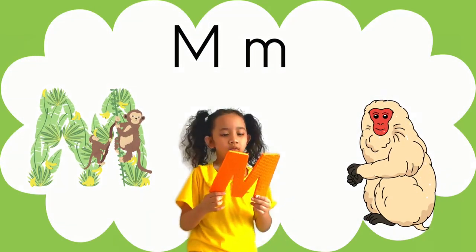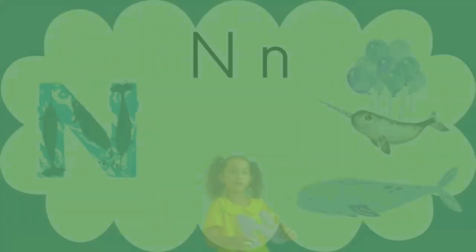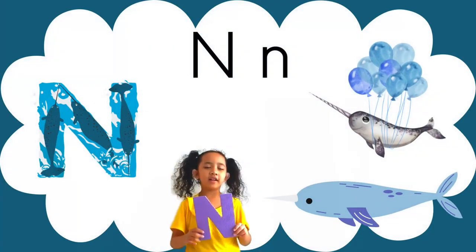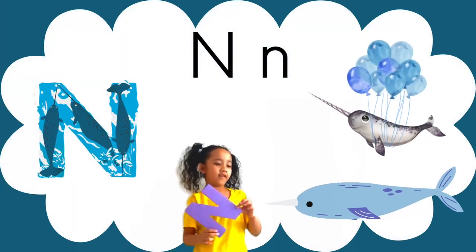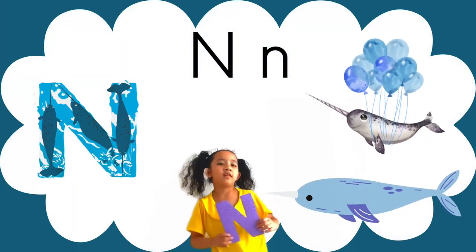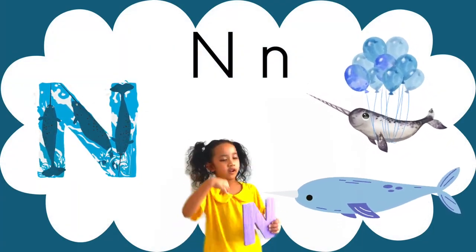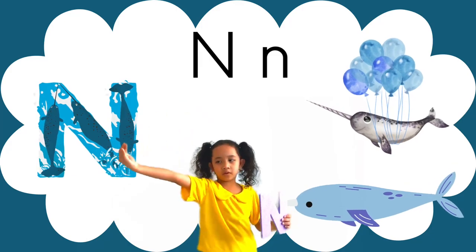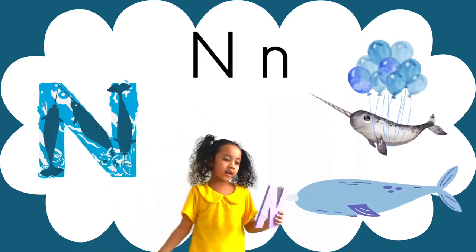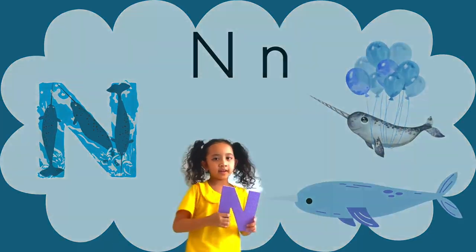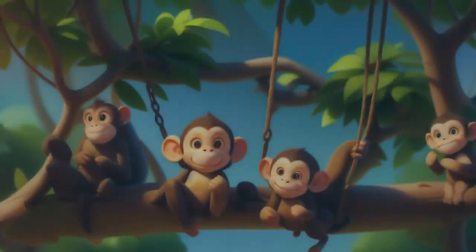M is for monkey, swinging in the trees. N is for narwhal, with a tusk that's long as can be.